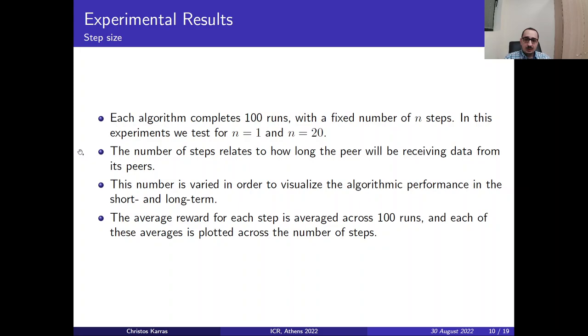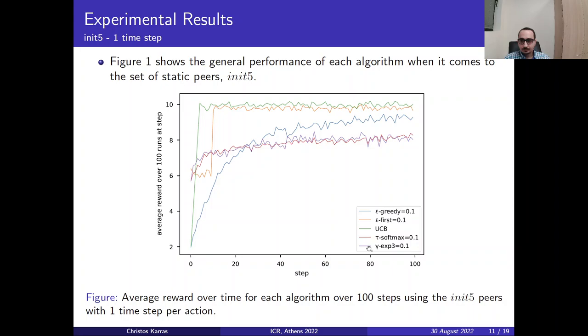Moving on to the experimental results, and particularly in the step size, each algorithm we create completes 1000 runs with a fixed number of N steps. In the first experiments we test for N equals to 1 and N equals to 20. This number of steps relates to how long the peer will be receiving data from each peer. So this number is varied in order to visualize the algorithmic performance in the short term and in the long term. The average reward for each step is averaged across 100 runs, and each of these averages is plotted across the number of steps.